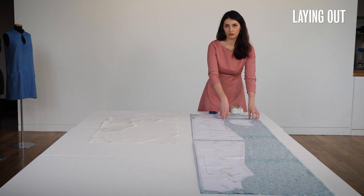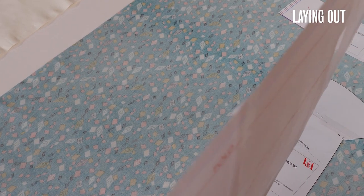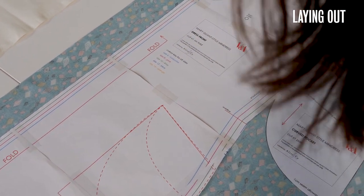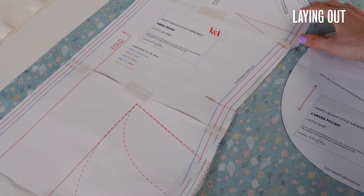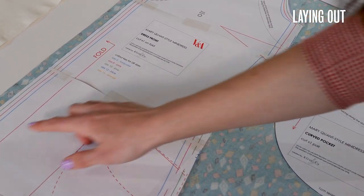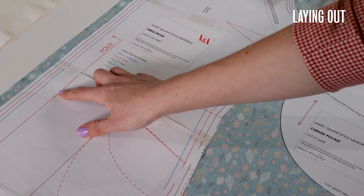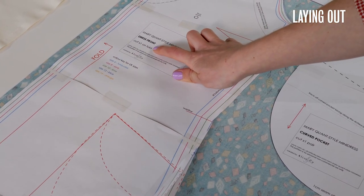So for example the quilting cotton that I'm using is only 110 cm wide so I need to lay my two main dress pieces end to end rather than on the two folds on either side. So you'll see that every pattern piece is marked with a grain line and also how many you need to cut.